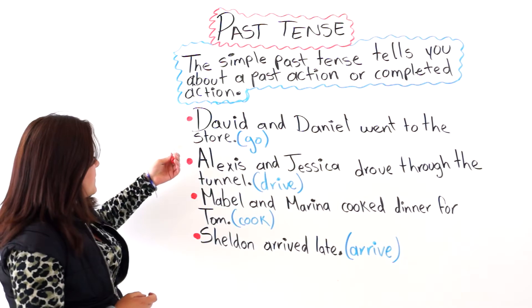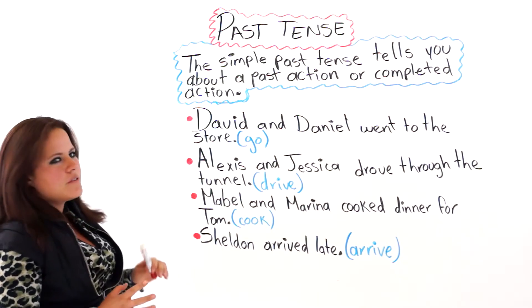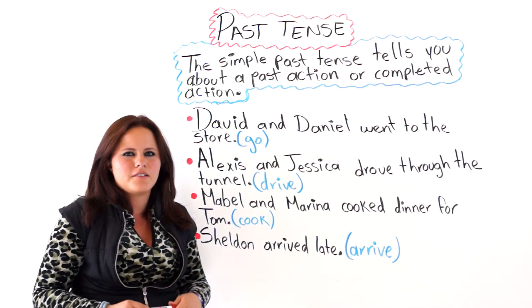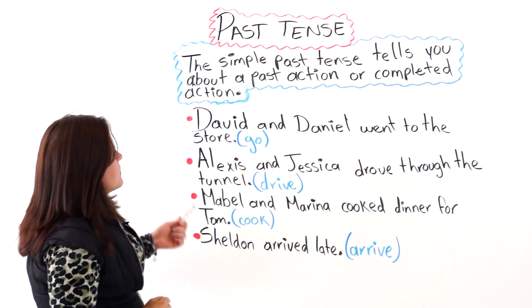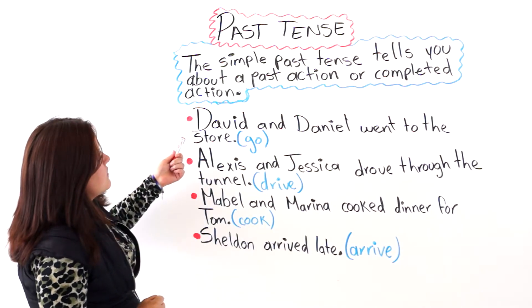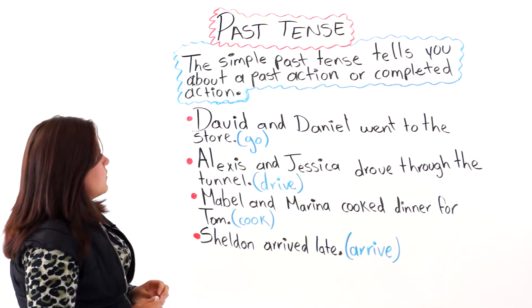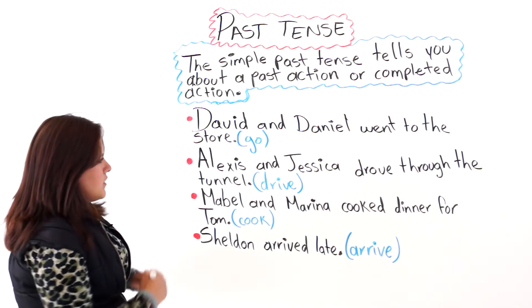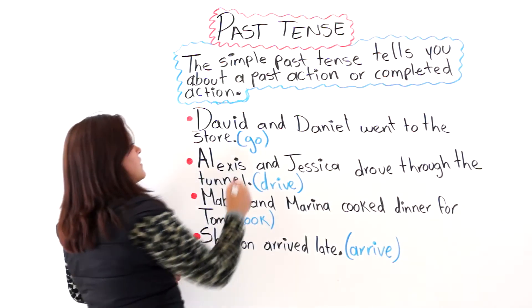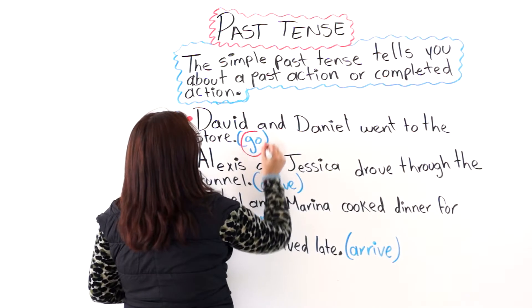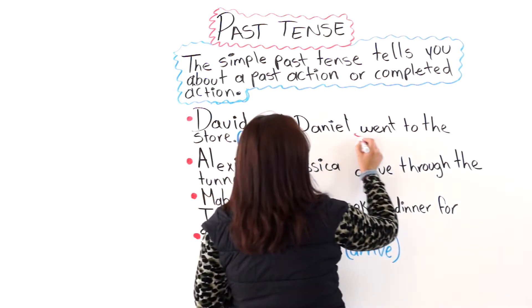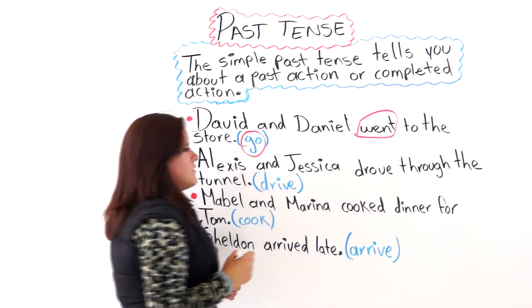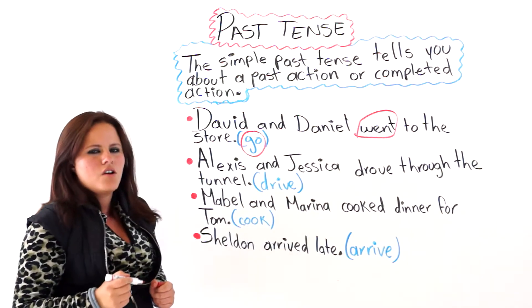I have four examples here written on the board for you so that you can see how the past tense works. For example, it says: David and Daniel went to the store. We are using the past of the verb 'go' here, and that tells you that it is a simple past tense. Went.